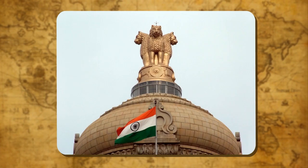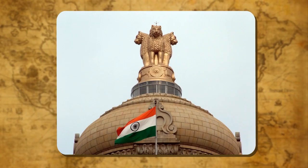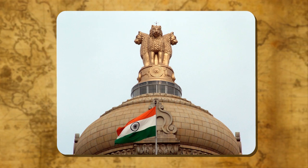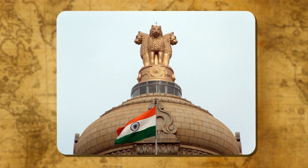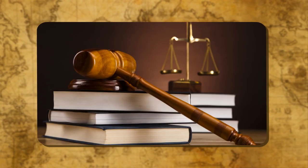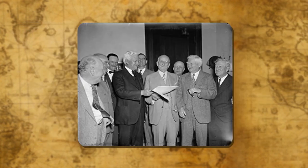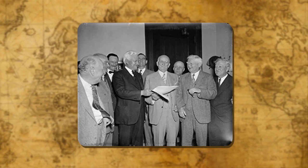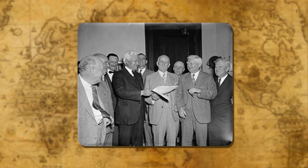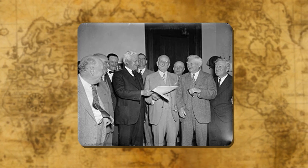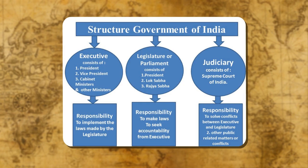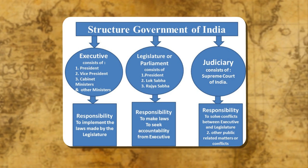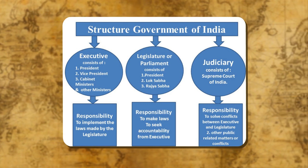A government is a body that governs a state or a country. It is an important and essential element of a country. It makes laws and has the power to enforce these laws. According to J.W. Garner, government may be defined as the agency or machinery through which common policies are determined. In ordinary words, we can say that government is the administrative organ of the country or a state.